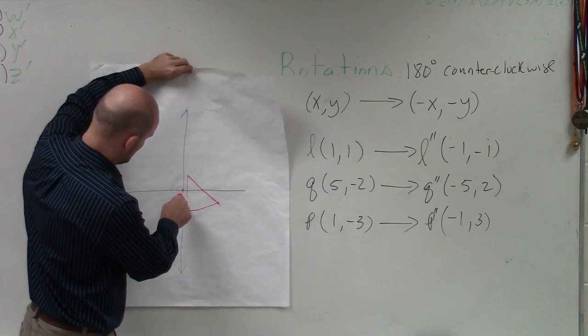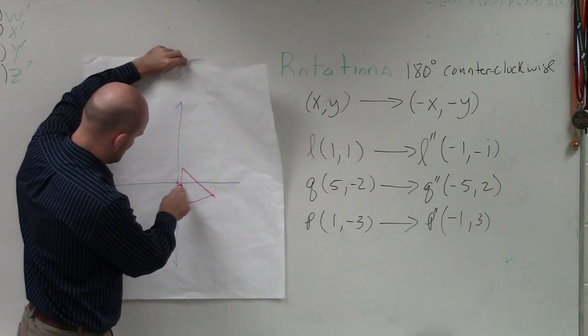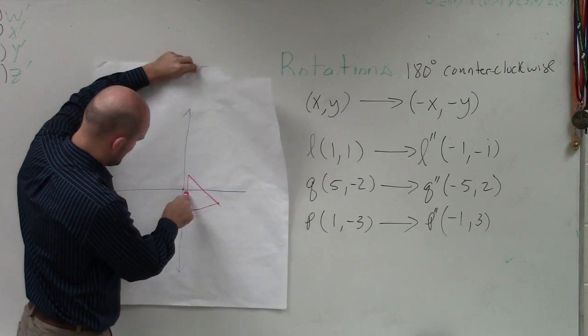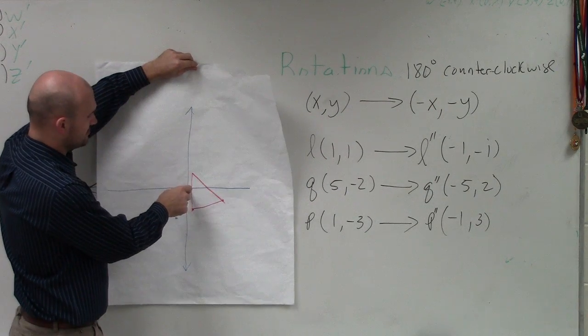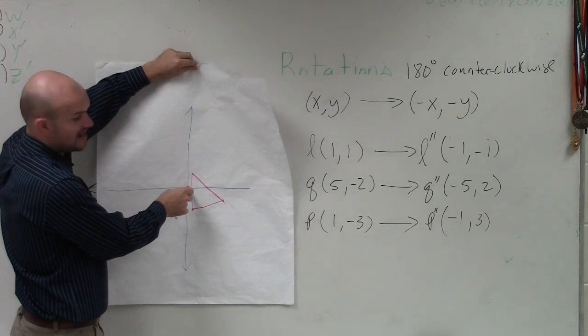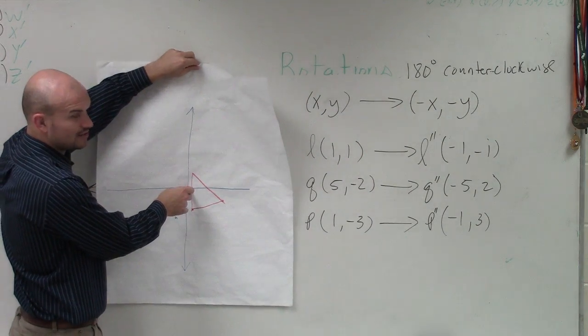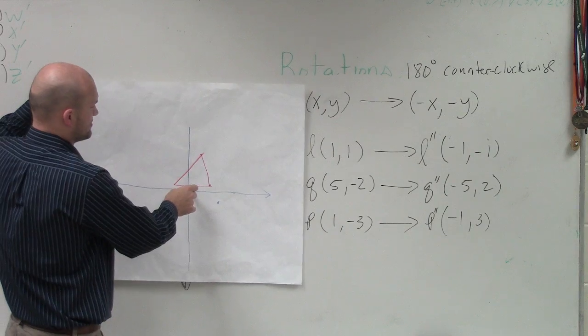Where's this dot? OK, there we go. Originally we had this dot right here, this is our triangle. We rotate it 90 degrees, we get to here.